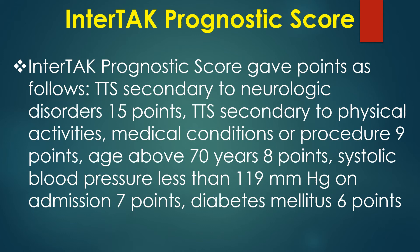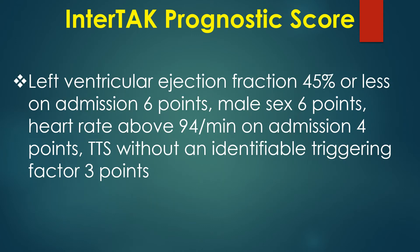The InterTAK prognostic score allocates points as follows: TTS secondary to neurologic disorders — 15 points; TTS secondary to physical activities, medical conditions, or procedures — 9 points; Age above 70 years — 8 points; Systolic blood pressure less than 119 mmHg on admission — 7 points; Diabetes mellitus — 6 points; Left ventricular ejection fraction 45% or less on admission — 6 points; Male sex — 6 points; Heart rate above 94 per minute on admission — 4 points; TTS without an identifiable triggering factor — 3 points.